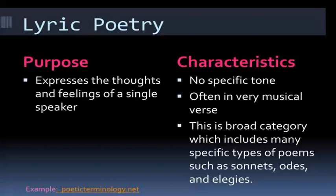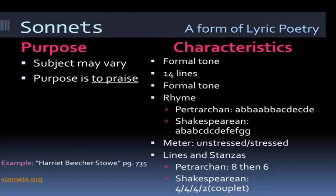This broad category includes many specific types of poems like sonnets, odes, and elegy. A sonnet is a 14-line poem of formal tone; the subject may vary but the main purpose is to praise. The rhyme scheme can be Petrarchan or Shakespearean, and the meter is unstressed-stressed. There are many examples: we have 154 sonnets by Shakespeare and Sonnets from the Portuguese by Elizabeth Barrett Browning.